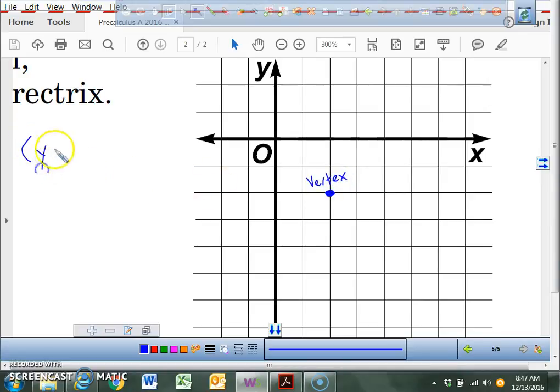By the way, the equation is y plus 2 squared equals 4 parentheses x minus 2, is that correct? Now, we know our hk, we just plotted it, that was 2 negative 2. Now, by the way, what does this right here, what does this 4 represent? That represents my value of 4 times p. So what is p going to equal in this particular case? 1. Now, why is that value important? Because that's going to tell me where the focus is, and where the directrix is.